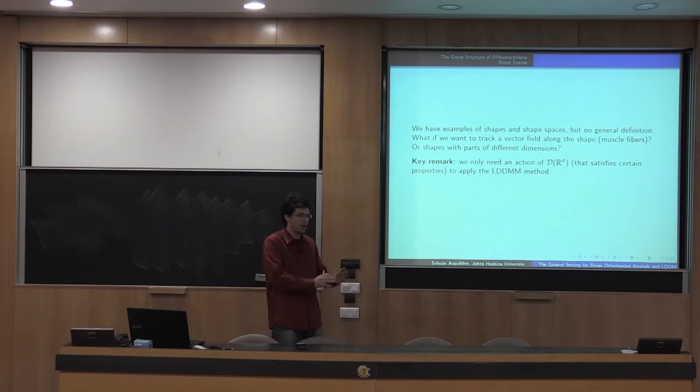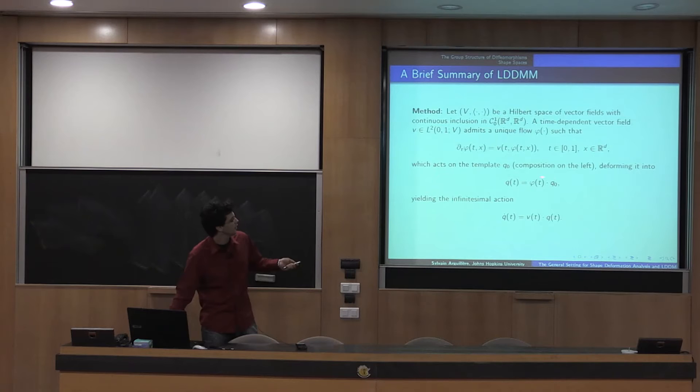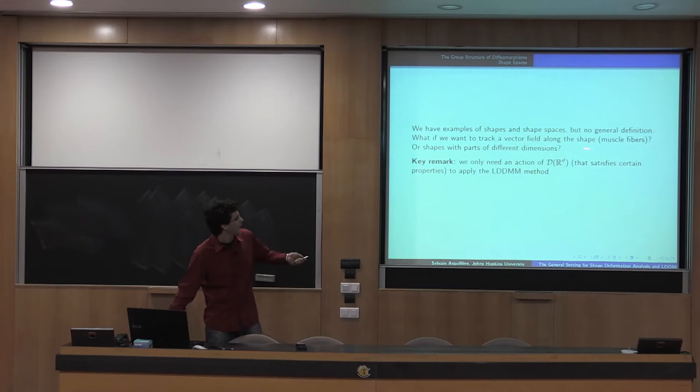So I wanted to do something that kind of unified and extended all of this, all of what we had on LDDMM so that for the future works, we just had to check that we were in that setting and everything would be done. So the key remark that's going to guide all of my talk is that actually to define everything that I've just described, this method, all we need is an action of the group of diffeomorphism on the space of shapes that does admit a kind of derivative with respect to time. In the end, I'm going to study the group structure on the space of diffeomorphism, which is a very specific group structure that has some nice properties, and then use those to define the general setting for shapes.